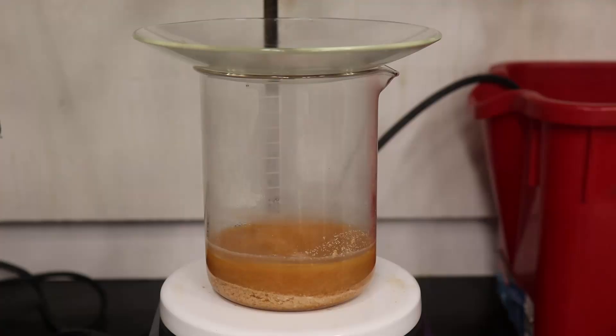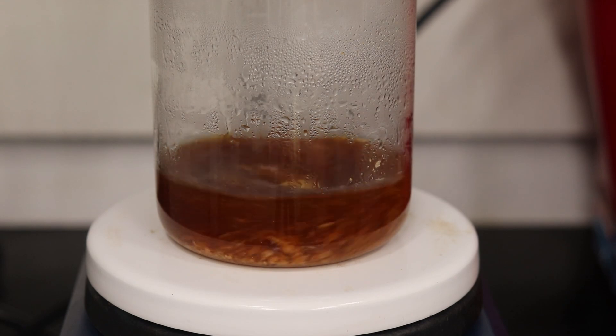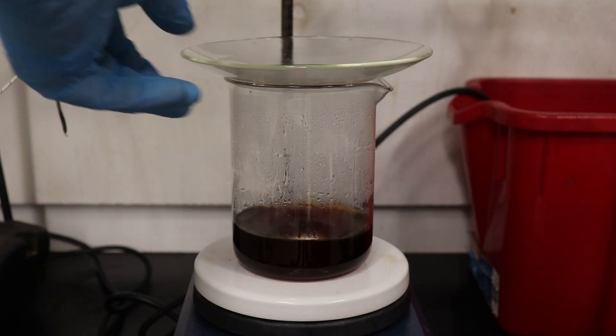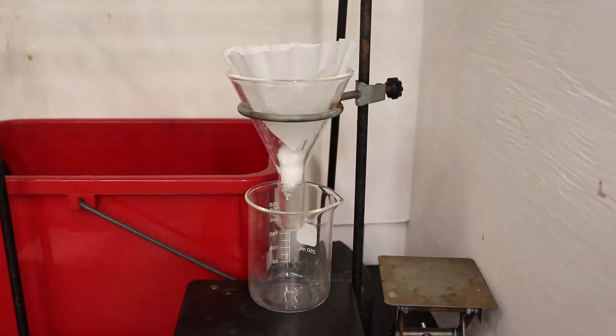I ran the recrystallization using a minimal amount of boiling ethanol, and I tried to use activated charcoal to decolorize the 2-methoxynaphthalene. However, it didn't seem to have much effect on the overall coloration of the solution.